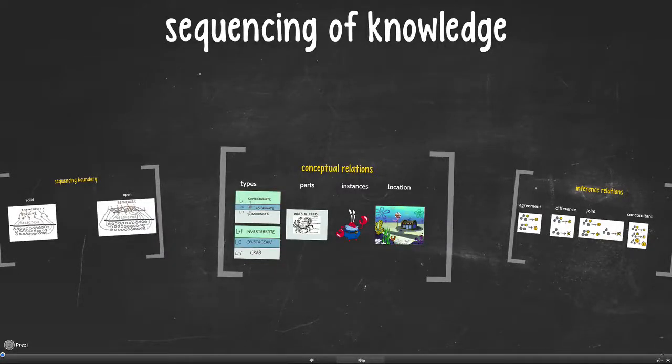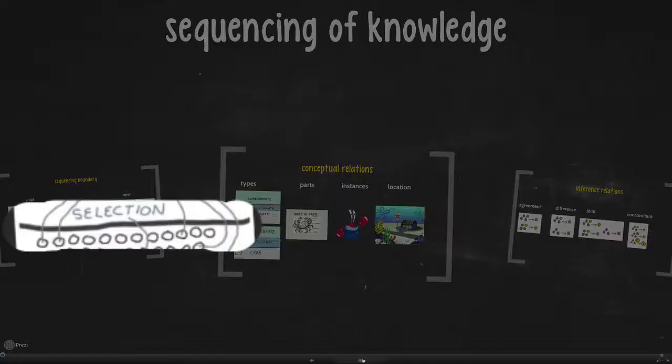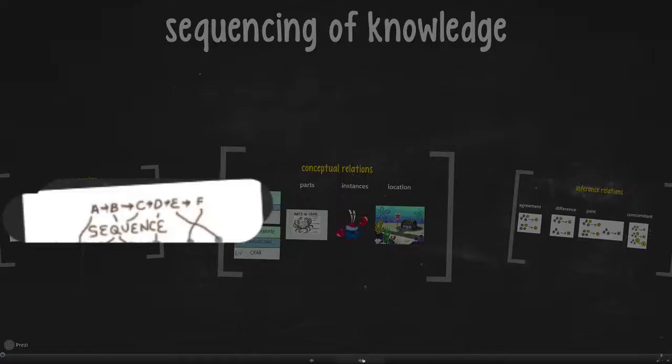The fifth question you ask yourself when doing educational analysis deals with the sequencing of knowledge. This follows pretty logically on from the selection of knowledge. After you've selected what it is that is going to be taught, then you have to sequence it in some way.